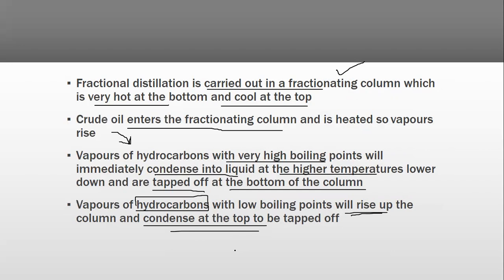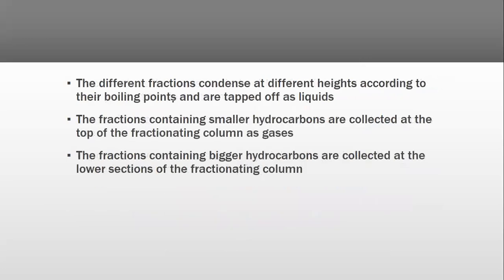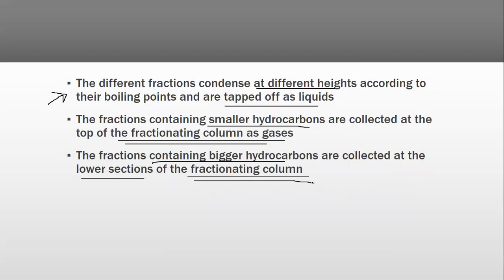As boiling point increases, the different columns would be separated into fractions. The different fractions condense at different heights according to their boiling points and are tapped off as liquids. The fractions containing smaller hydrocarbons are collected at the top of the fractionating column as gases. The fractions containing bigger hydrocarbons are collected at the lower sections of the fractionating column.